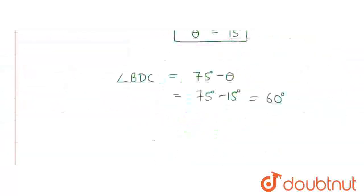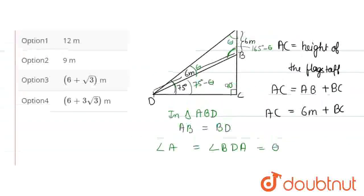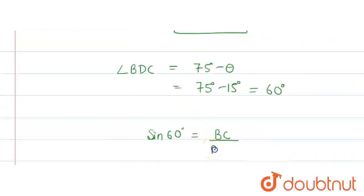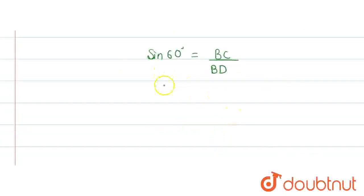Then we will apply sine 60 degrees. Sin 60 degrees equals perpendicular upon hypotenuse, perpendicular BC upon hypotenuse BD. We know that sine 60 degrees is equal to root 3 upon 2. BD given is 6 meter. So BC will be 6 root 3 upon 2, which equals 3 root 3 meter.